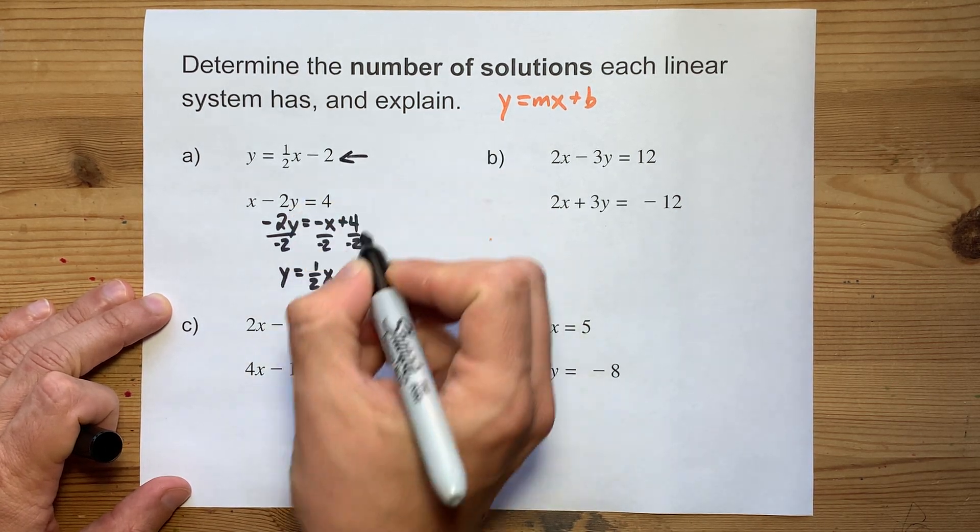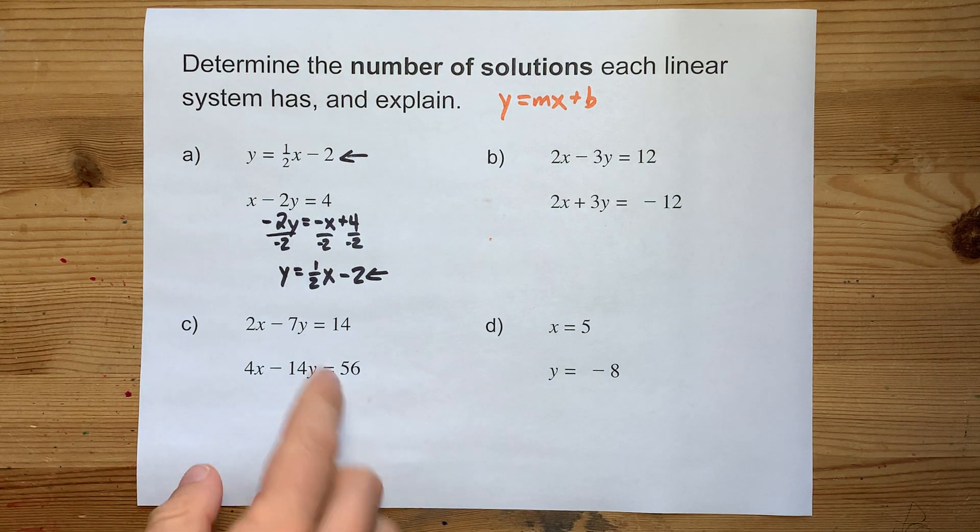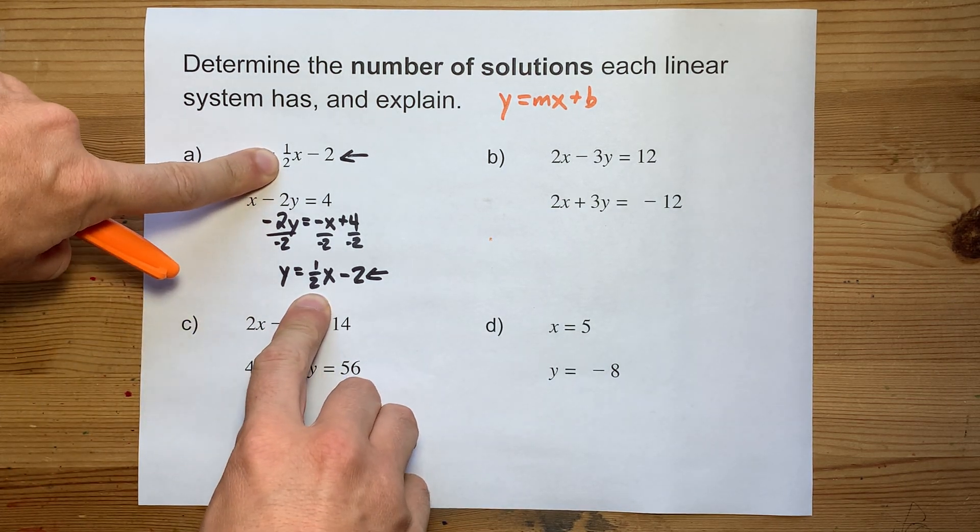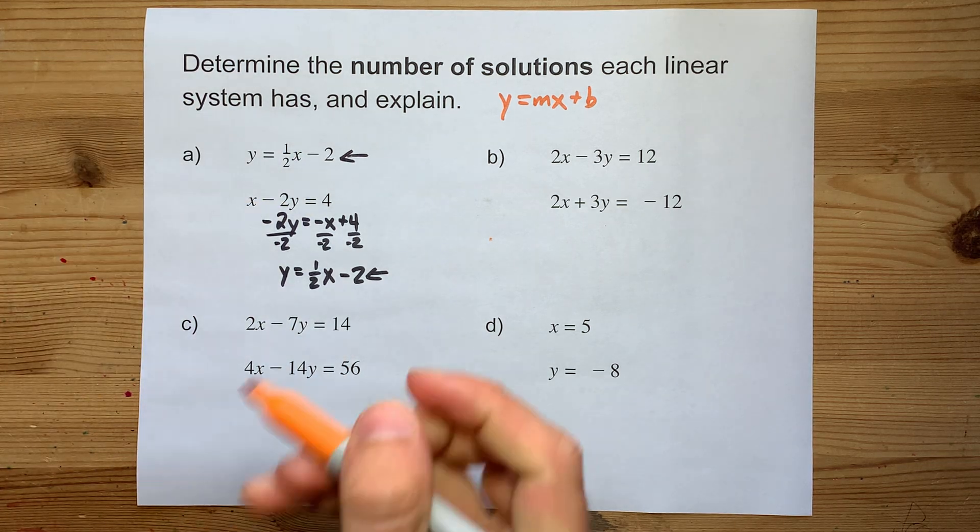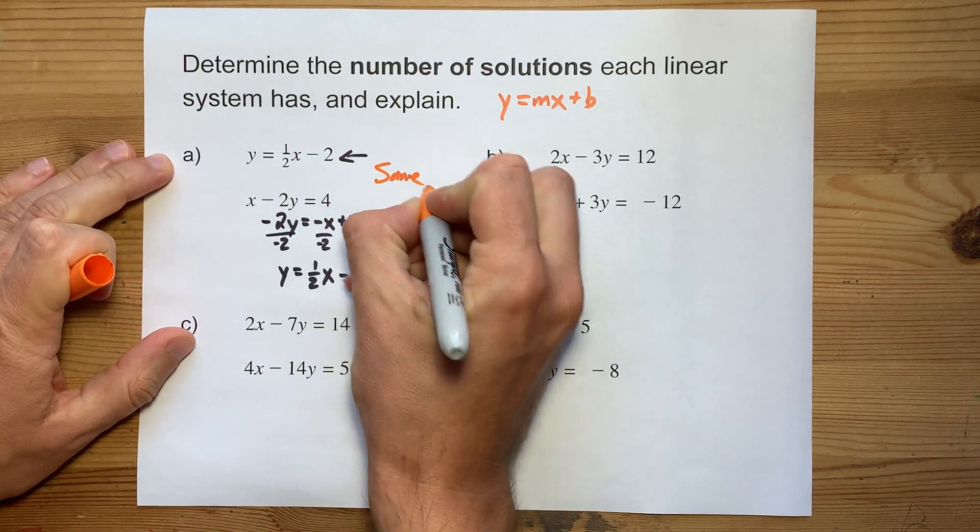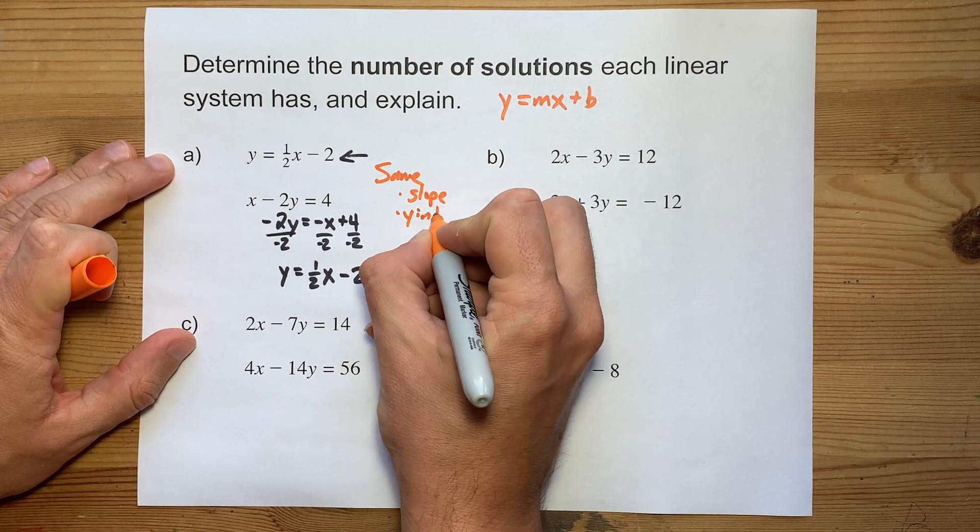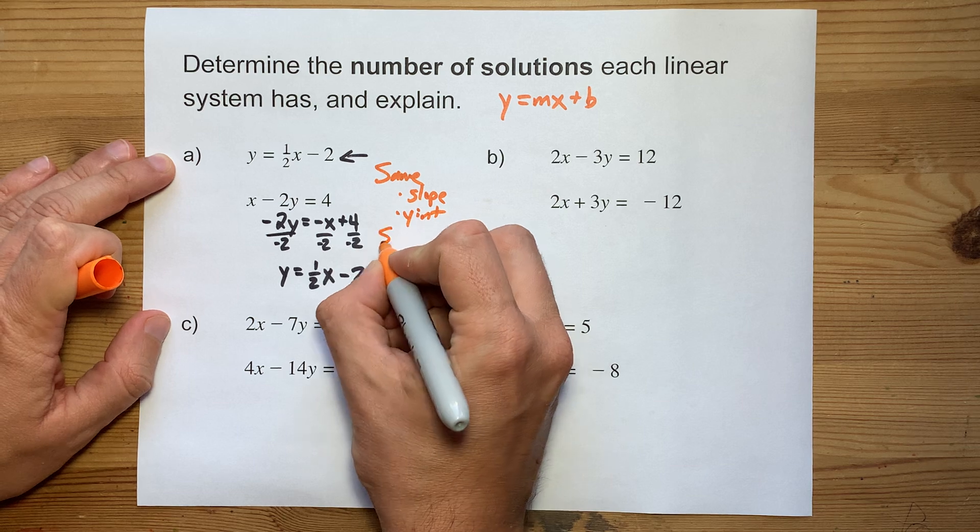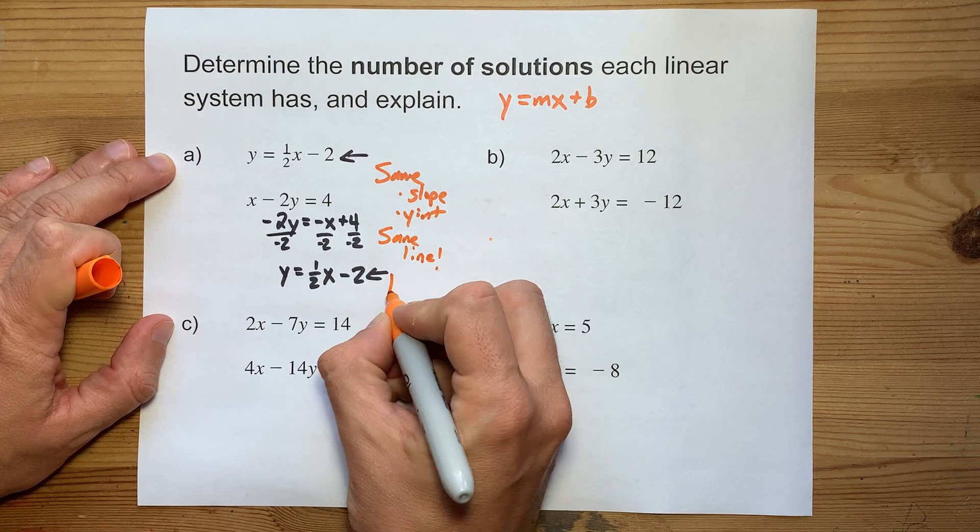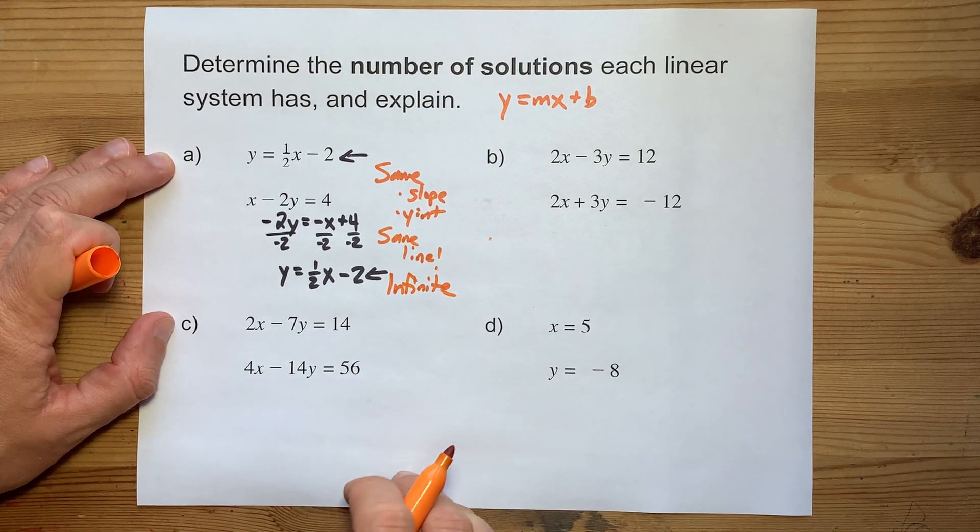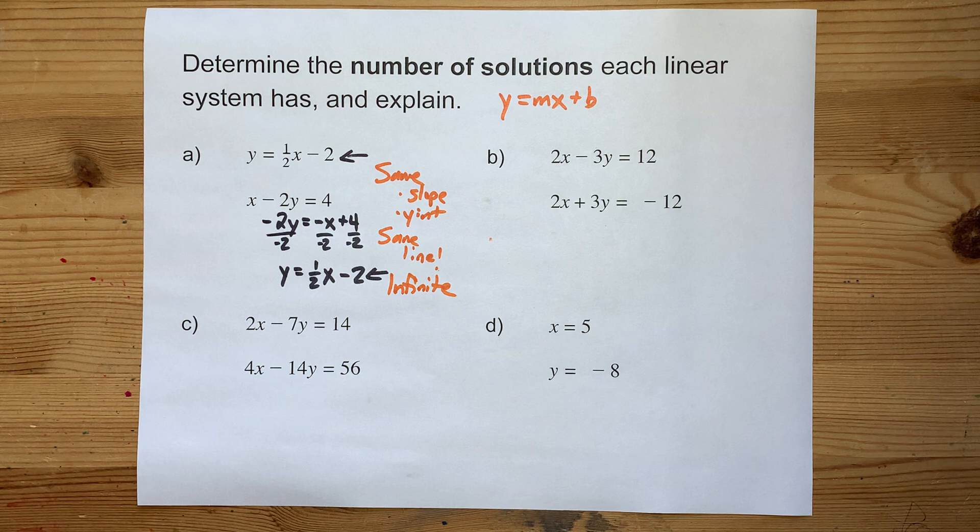So we're comparing this line with this line. Well, they actually have the same slope of positive 1 half and the same y-intercept. I'll write that here explicitly. Same slope and same y-intercept. These are the same line. They have an infinite number of points of intersection or infinite solutions to this linear system.